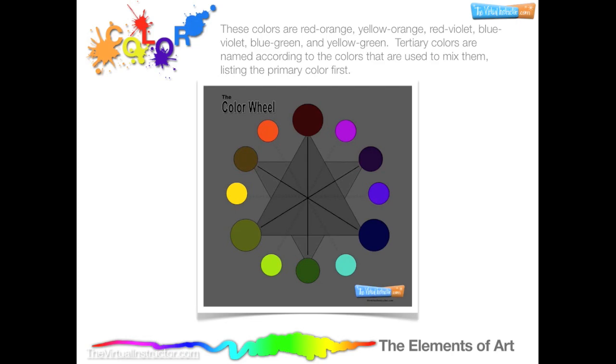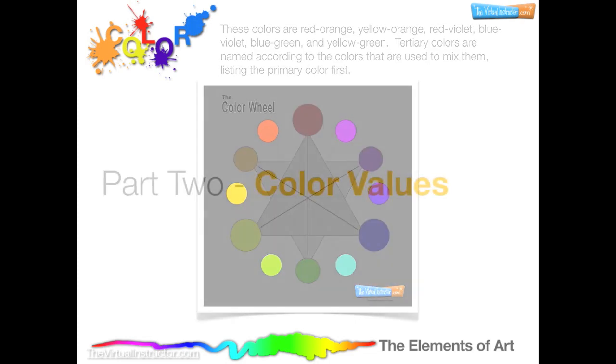For example, red and orange create red-orange, while red and violet will give you red-violet.